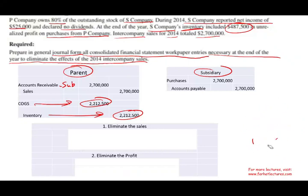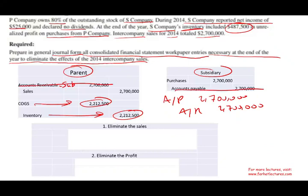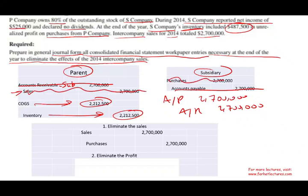At year-end, the first thing we do is eliminate the intercompany receivable and payable: debit Accounts Payable $2.7 million and credit Accounts Receivable $2.7 million — those are gone. Then we eliminate the sale: debit Sales $2.7 million and credit Purchases $2.7 million. So the sale is gone and the purchases are gone.